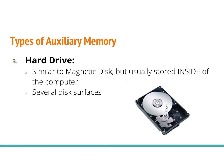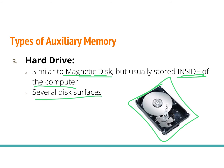The third type of auxiliary memory is the hard drive, which is very similar to a magnetic disk. It's usually stored inside the computer, though it's technically considered an auxiliary memory device because you can take it out and remove it. It can hold larger amounts of information than a floppy disk. You could move it to a different computer and have that hard drive run a different computer. There are several disk surfaces on this because it's intended to be the main memory source for your computer.